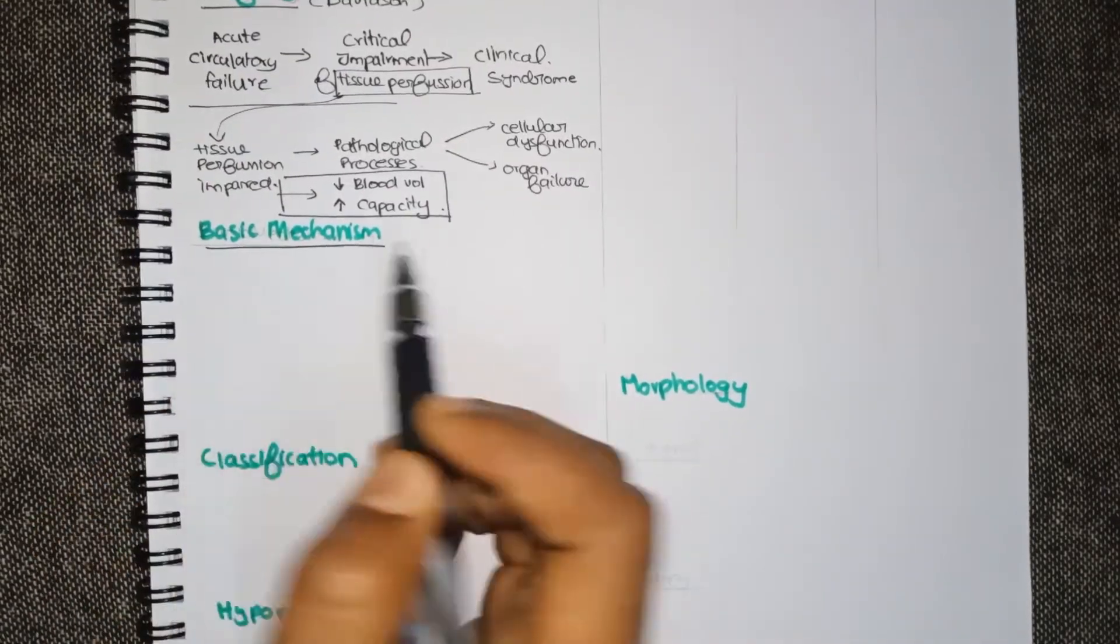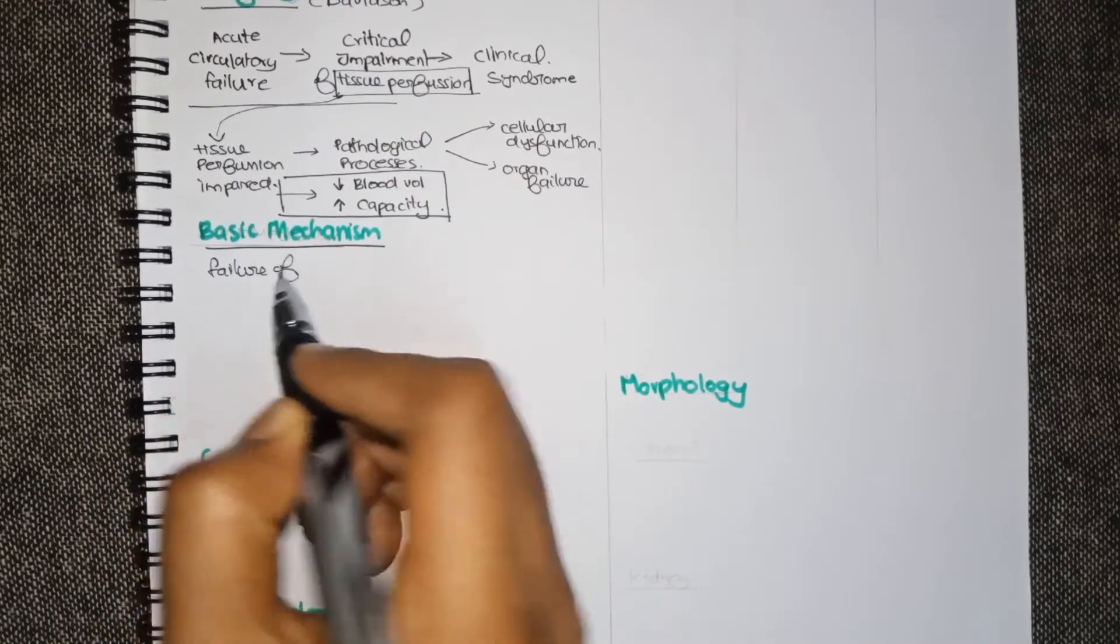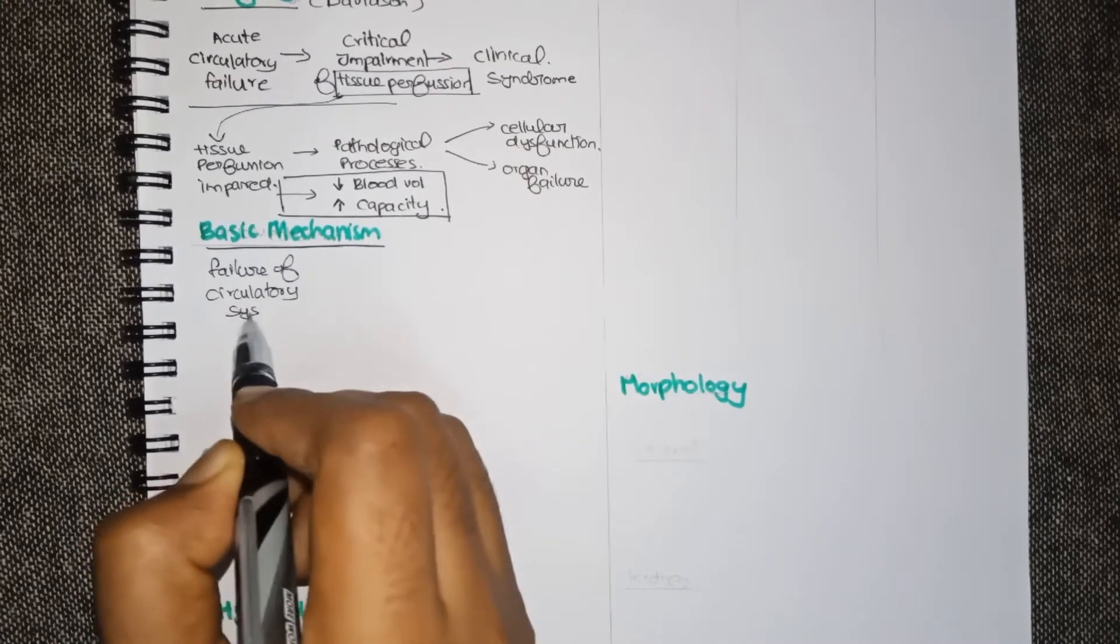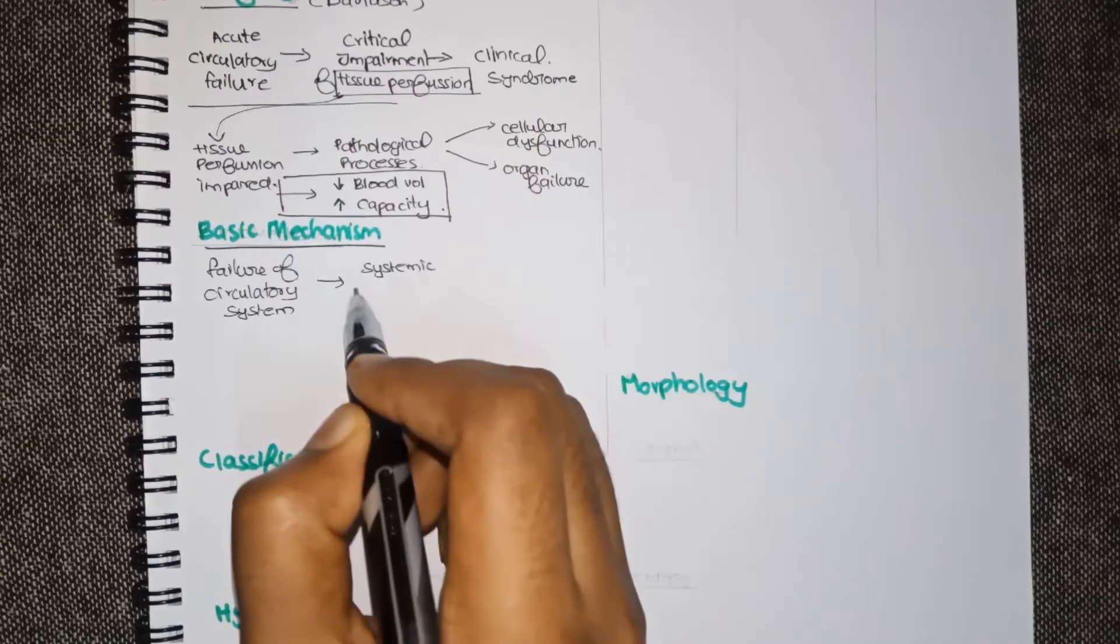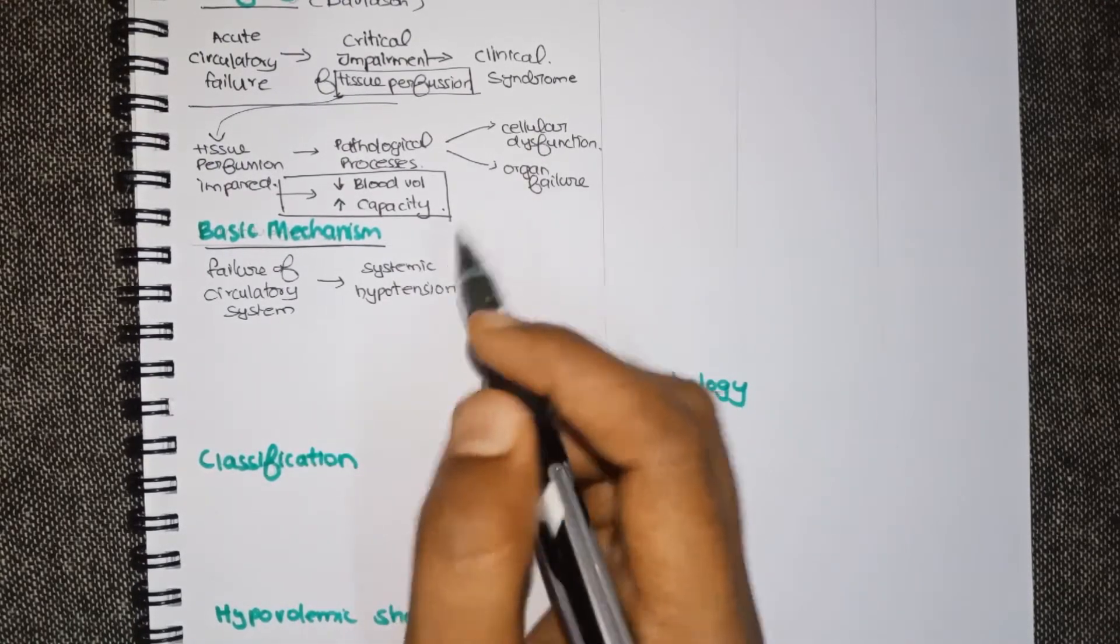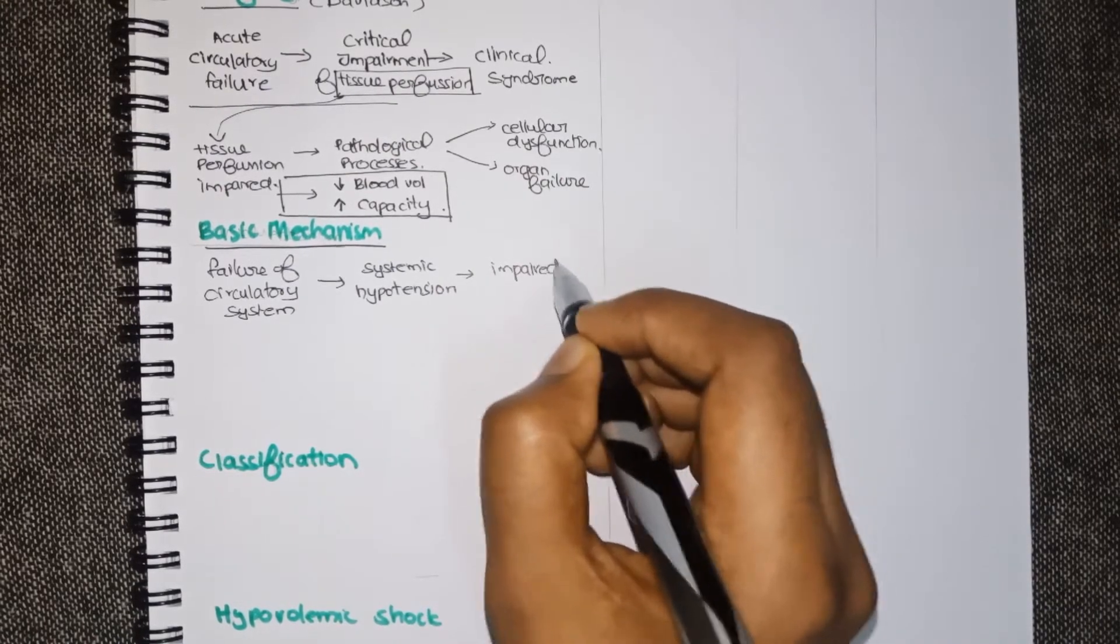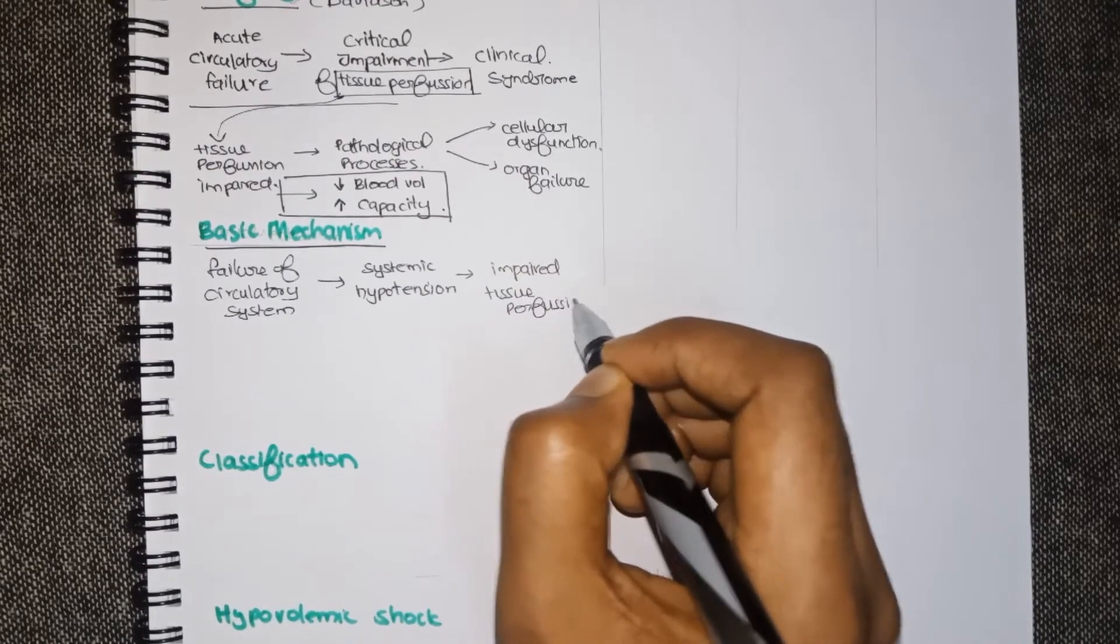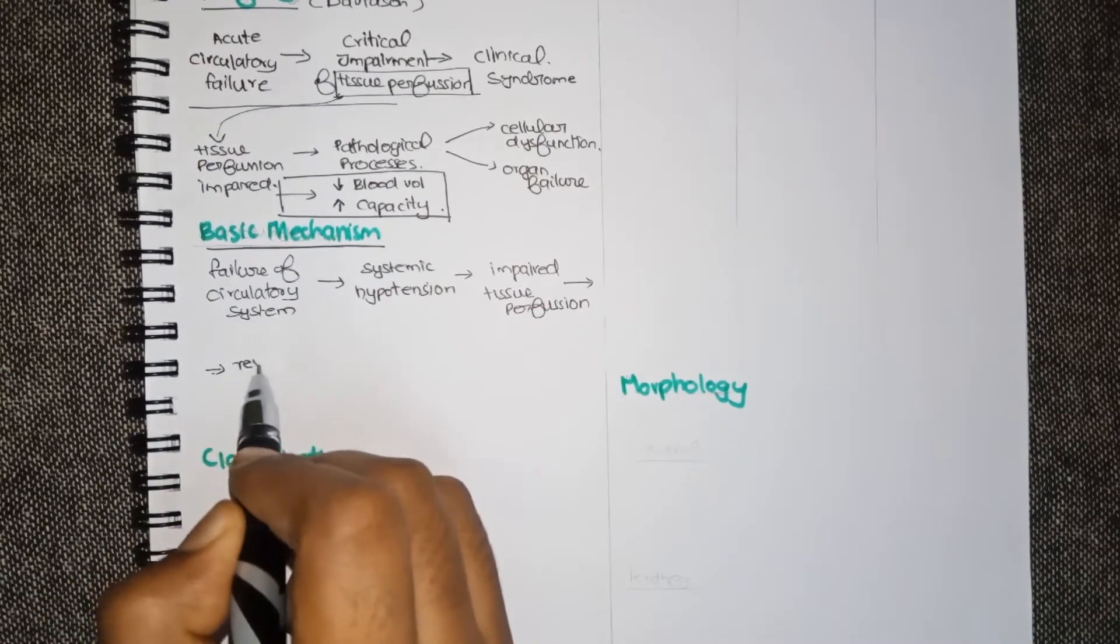Now moving on to the basic mechanism, ultimately all types of shock pass through the same pathway. First of all there will be a failure of the circulatory system and that results in systemic hypotension. When the BP falls, as we said before, there will be impairment of tissue perfusion.